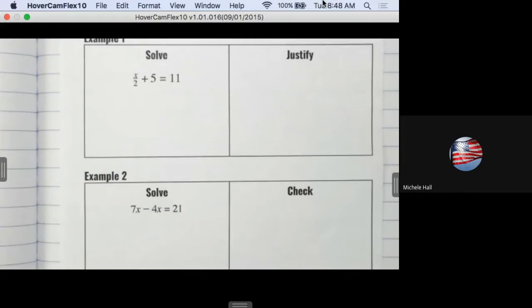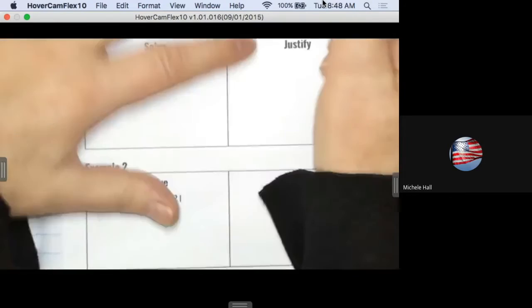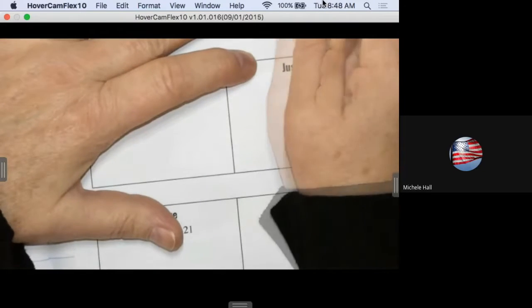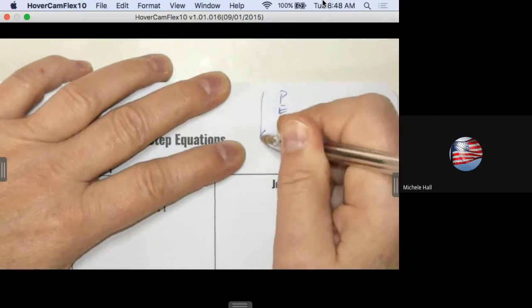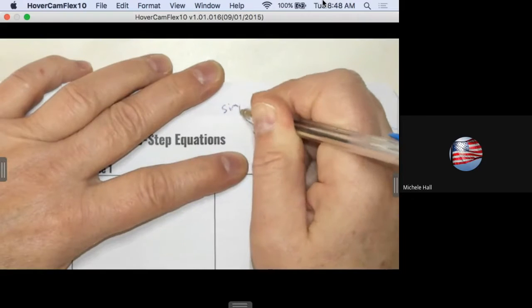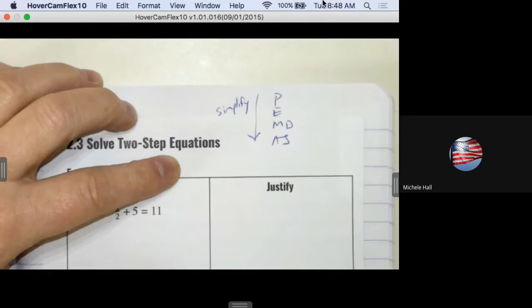Two-step equations. So two-step equations, now there has to be some order to it. We're thinking about PEMDAS, and I go forward when I'm simplifying expressions. Well, when I'm solving, everything has an opposite.